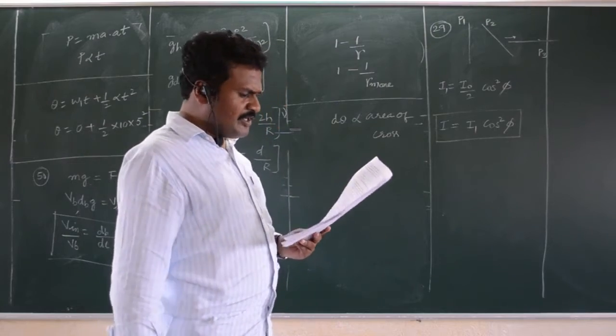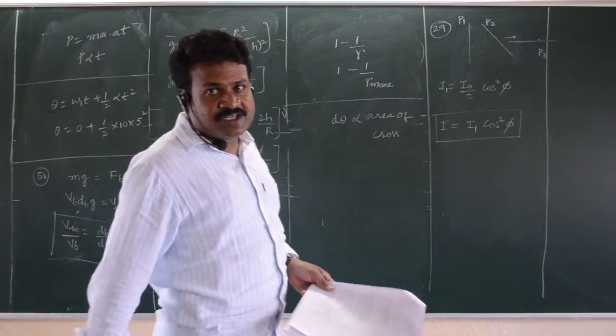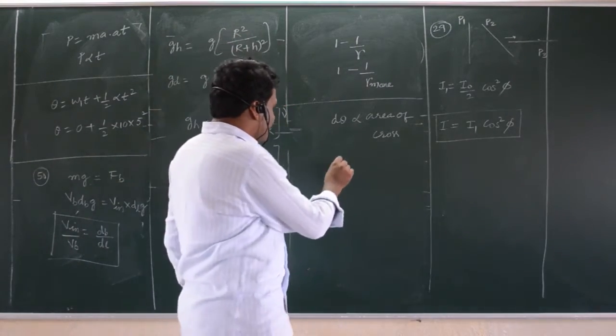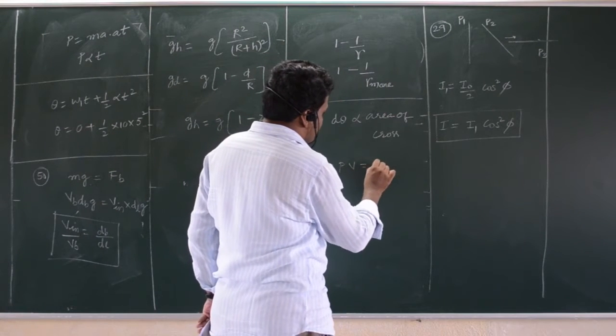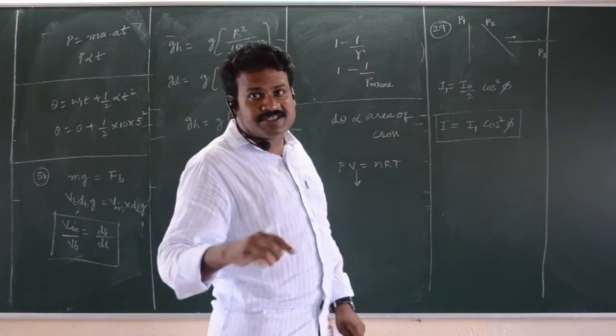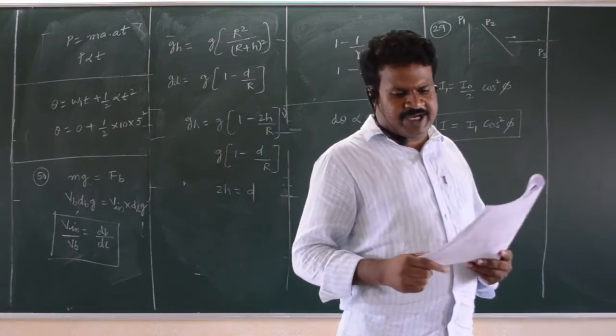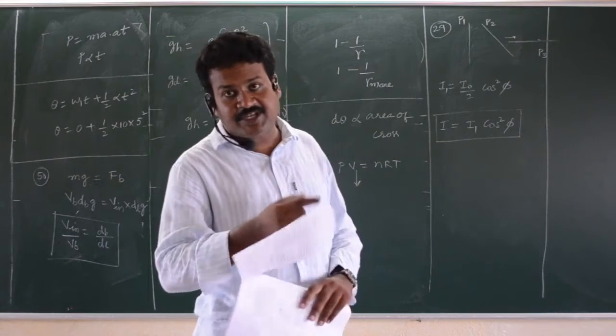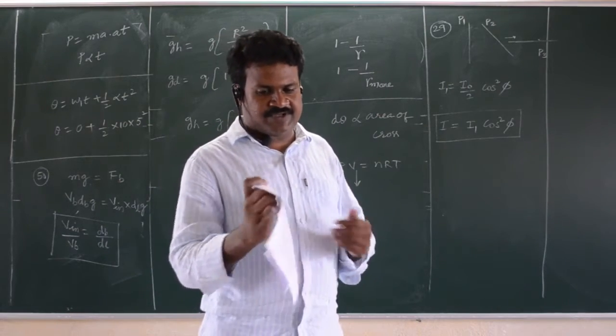In adiabatic expansion, temperature decreases. So, therefore, PV is equal to NRT. Temperature decreases means the product of PV also decreases. Indirectly asking what happens to temperature. Adiabatic expansion cools down, where adiabatic compression heats. Temperature will increase.